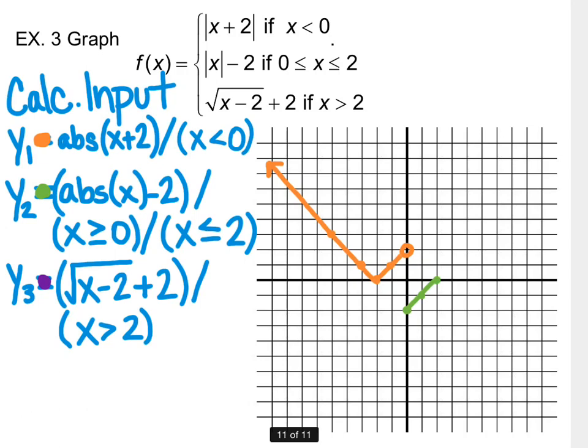Then y3 is a square root function. The minus 2 under the radical gives a shift right, and the plus 2 outside the radical gives a shift up 2. When plotting points, the square root function connects up and lines up with the second function at x = 2, with an open circle there continuing rightward. Going left to right across the graph, it's continuous but with a jump discontinuity — each piece needs to line up across the graph.